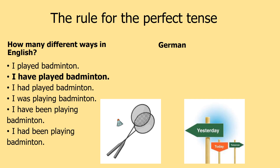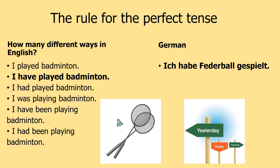You're going to see why this form is so important because it has the 'I have' in there. In German we say 'ich habe Federball gespielt' — this is the form most similar to the English 'I have played badminton.' The key difference is that 'gespielt' — the played — comes at the end. We always send what we call the past participle to the end.